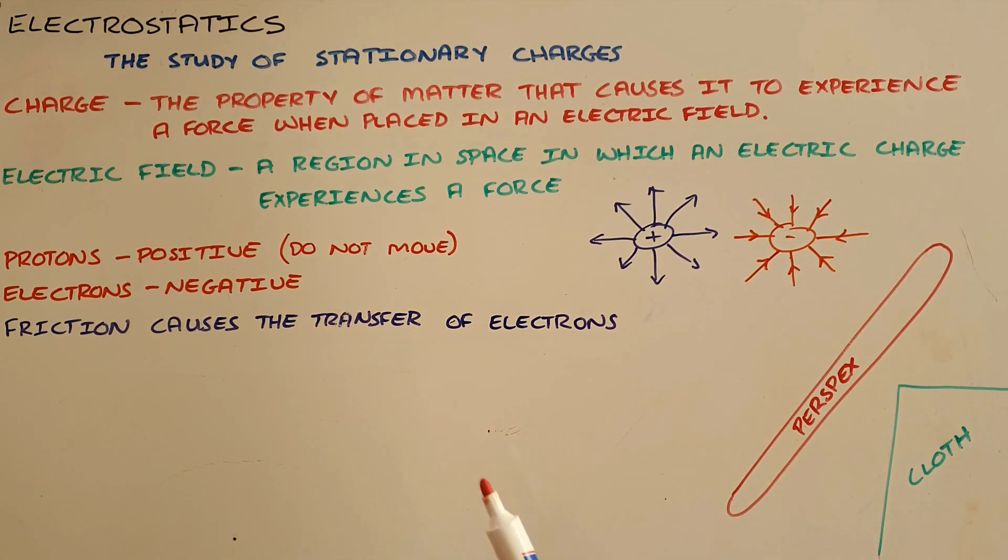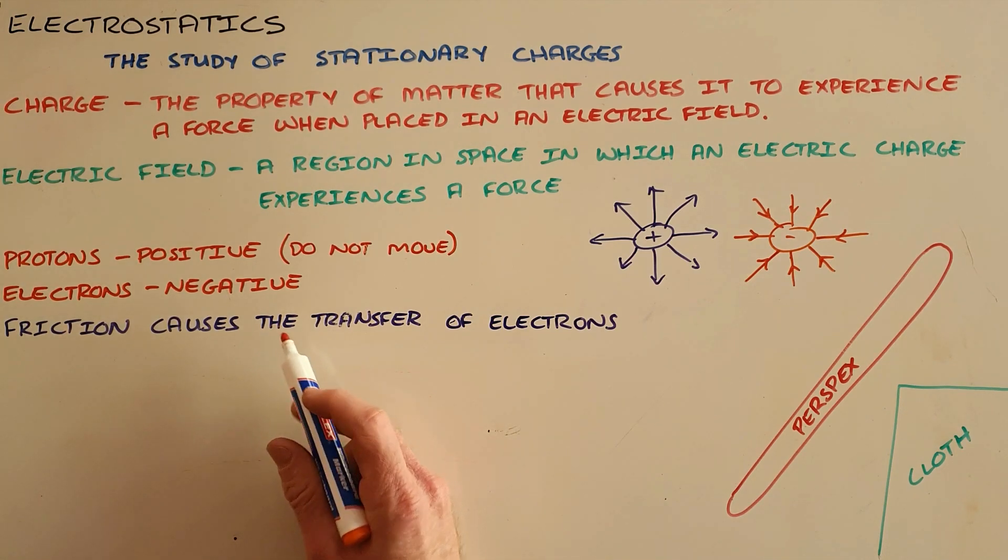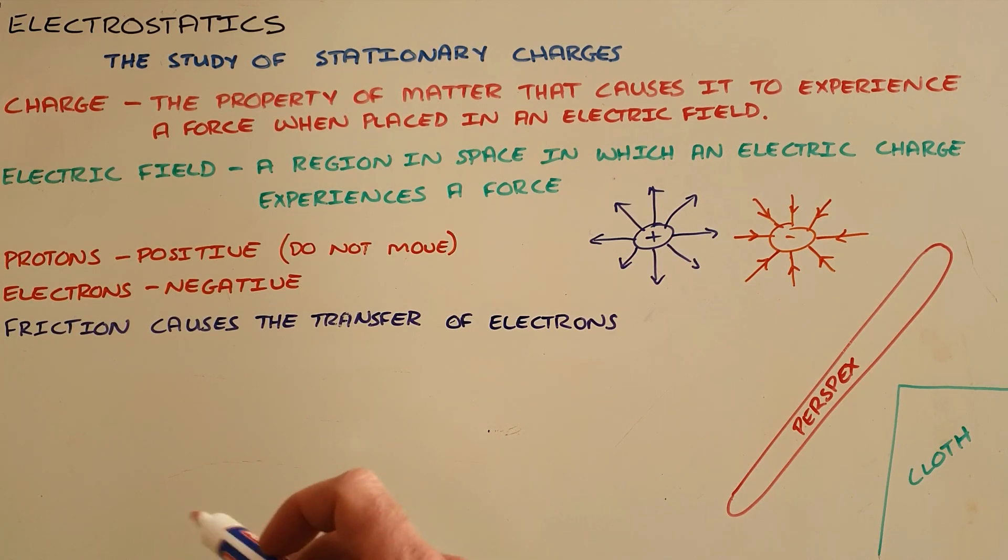What's important to see here is that charges are able to move from one object to another, and usually that is done through friction. It is also important to note that it is only electrons that can move as a result of friction, as the protons, the positive charge, do not move. They stay where they are.